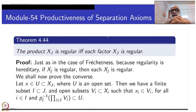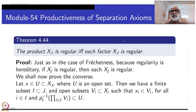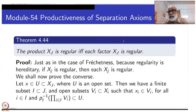Just as in the case of Hausdorff-ness, because regularity is hereditary — if the product X_J is regular, then each X_j is regular. Why? Because each factor space can be identified as a subspace of the product space, as X can be embedded in X cross {y} inside X cross Y. So if the product space is regular, the subspace is regular, meaning each factor is regular. That is easy.